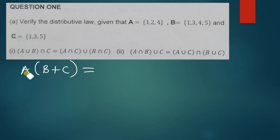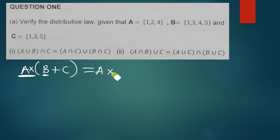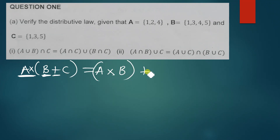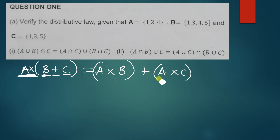How do you distribute this? It means you are going to multiply A times everything in the brackets. So we get A times B plus A times C. You write it like that — this is how you distribute.